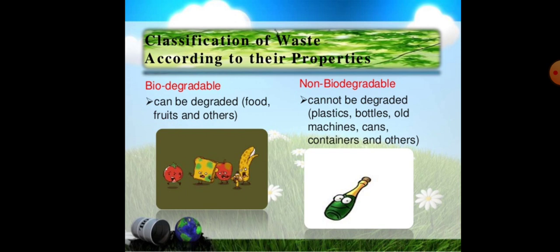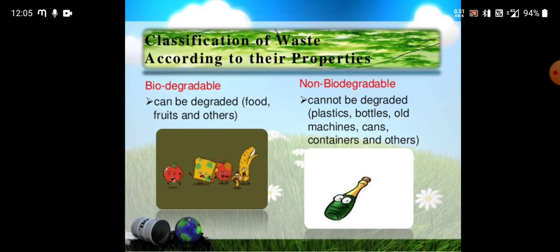Then classification of waste according to their properties. Firstly, biodegradable — waste that can be degraded or decomposed easily, like food, fruits, and other organic materials. And non-biodegradable waste cannot be degraded, like plastics, bottles, old machines, cans, and containers. These are the two types of waste classification: biodegradable and non-biodegradable.